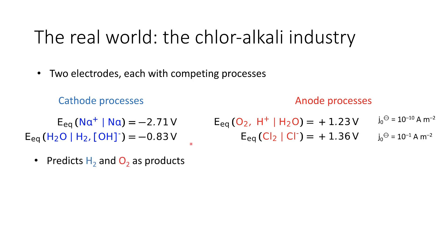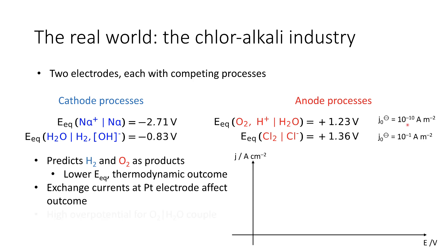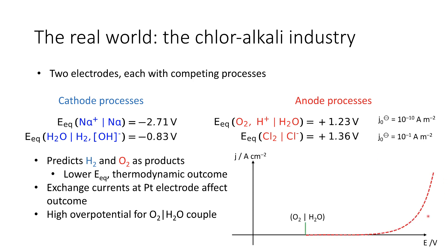Thermodynamics predicts we should get hydrogen gas and oxygen gas as products, because we have a lower electrode potential for each. However, when we look at the exchange current density as a function of applied potential at the platinum electrode, we find the much smaller exchange current density for the oxygen-water couple requires a very high overpotential to supply any measurable current. For chlorine, at the same potential, we get a much greater current, so chlorine production dominates — kinetics overrules thermodynamic predictions.